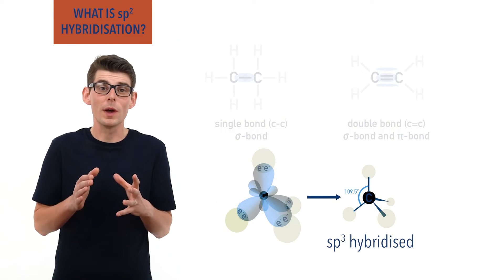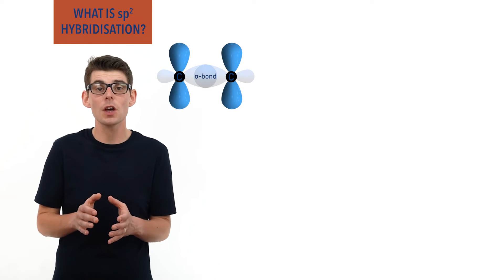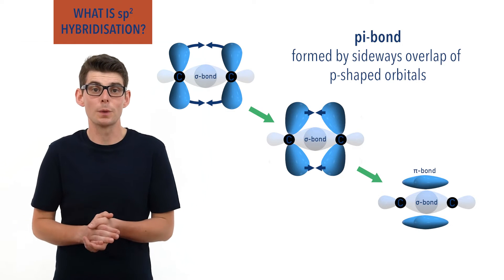This is because when forming a pi bond, p-shaped orbitals from two carbon atoms have to overlap sideways, above and below a sigma bond between the two atoms.